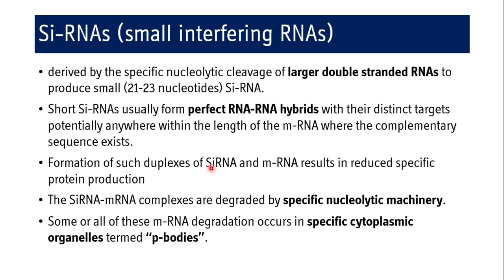Coming to small interfering RNAs, siRNAs are derived by specific nucleolytic cleavage of larger double-stranded RNAs to produce small siRNAs of 21 to 23 nucleotides. The short siRNAs usually form perfect RNA-RNA hybrids because they are highly complementary with their distinct targets, potentially anywhere within the length of the mRNA. If siRNA binds and hybridizes perfectly without any base-pair mismatch, it will exert its effect of destruction of mRNA. These siRNA-mRNA complexes are degraded by specific nucleolytic machinery, and some or all of this mRNA degradation occurs in specific cytoplasmic organelles called P-bodies.